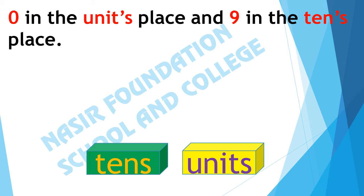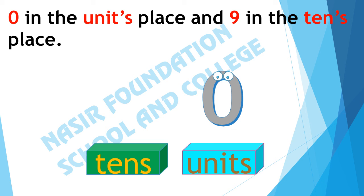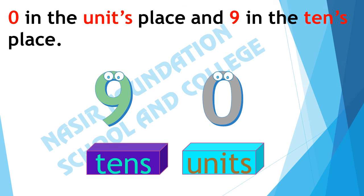0 is in the units place and 9 is in the tens place. In the units place there is 0, and on the tens place there is 9. There are 9 tens and 0 units. It makes 90.